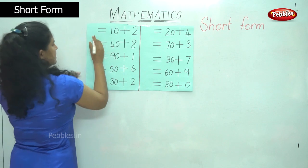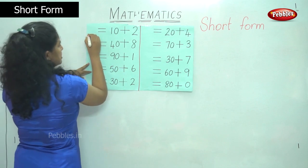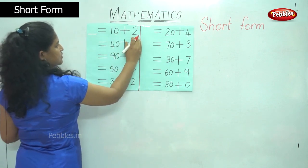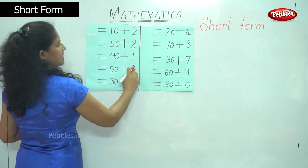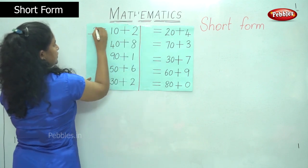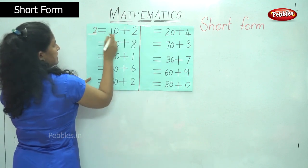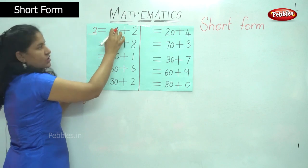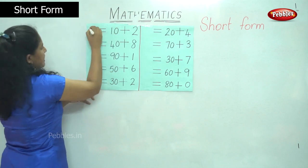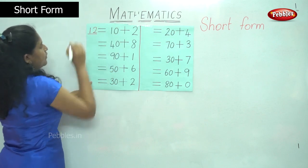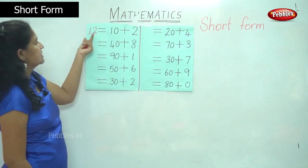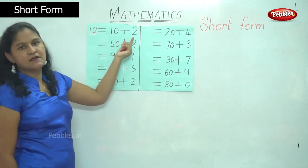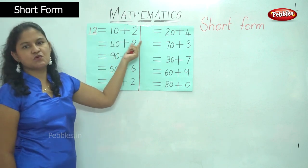We have a dash here and the number is equal to 10 plus 2. So in the ones place I have 2, and in the tens place I have 1 ten or 10. So it becomes number 1. My answer is 12 — that is 1 ten plus 2 ones.